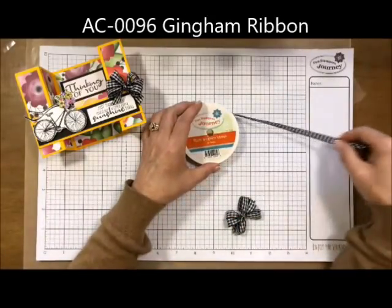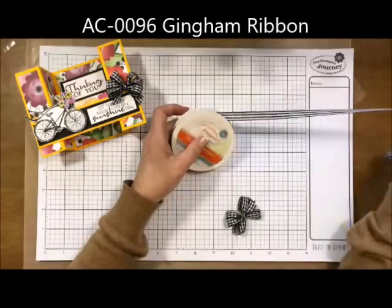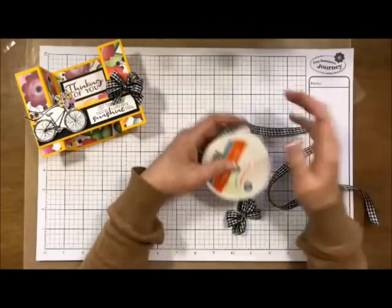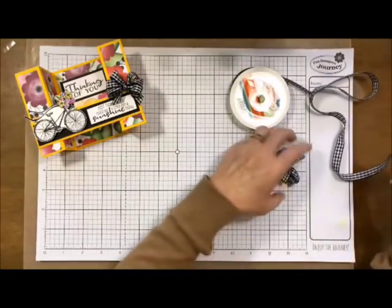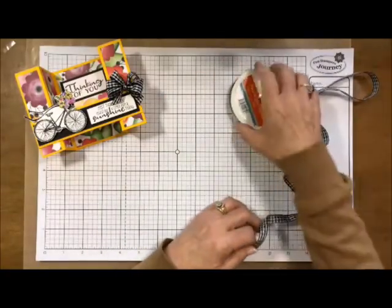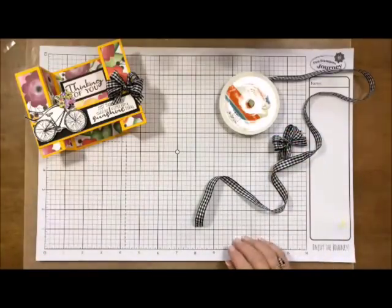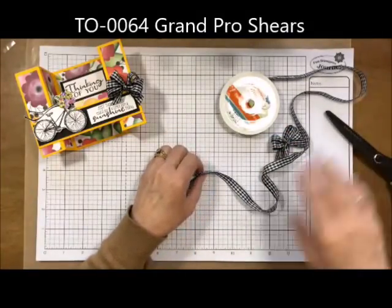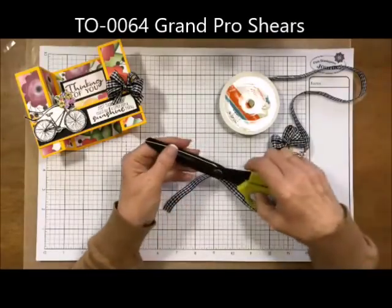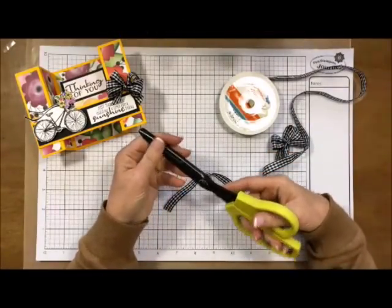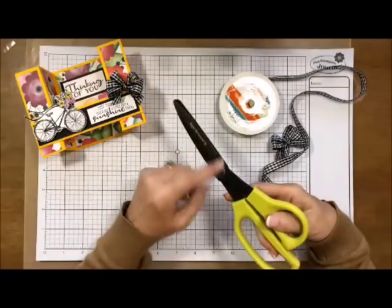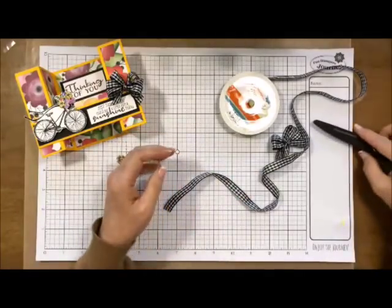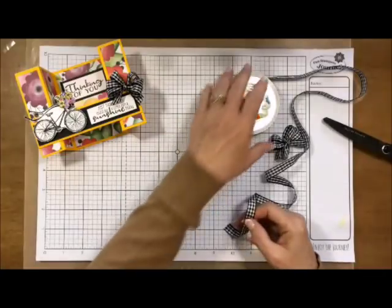I'm just using the Funstamper's Journey Black Gingham Ribbon and let's just get started. You can pre-cut your ribbon but why do that and waste a lot of it? So I'm just going to leave it on the spool and then cut it as I need to. So I'm going to bring in my Grand Pro shears because I do use those. They're just the sharpest, and I mean sharp, not cool like sharp, but the sharpest scissors I have. These are just non-stick scissors. I love them. I'm going to bring those in and use those at the end.